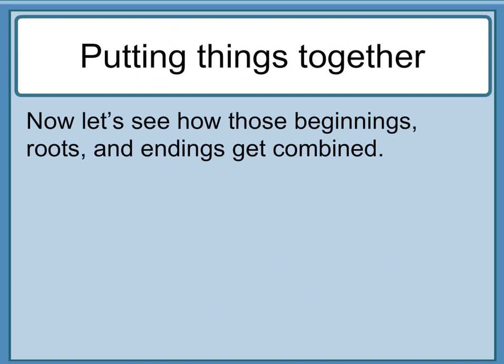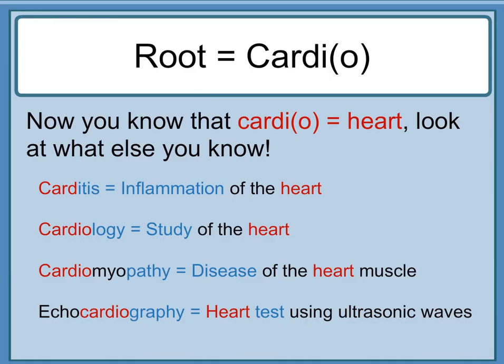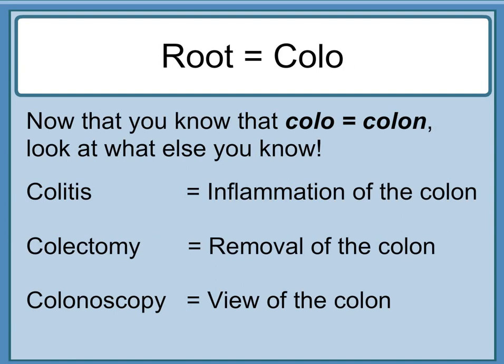Now let's see how beginnings, roots, and endings get combined. Now that you know that 'cardi-' or 'cardio-' equals heart: 'carditis' equals inflammation of the heart; 'cardiology' equals study of the heart; 'cardiomyopathy' equals disease of the heart muscle; 'echocardiography' equals heart test using ultrasonic waves. Now that you know that 'colo-' equals colon: 'colitis' equals inflammation of the colon; 'colectomy' equals removal of the colon; 'colonoscopy' equals view of the colon.